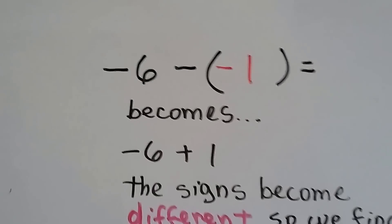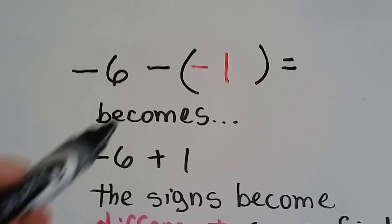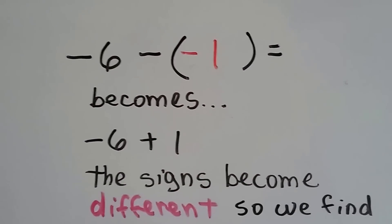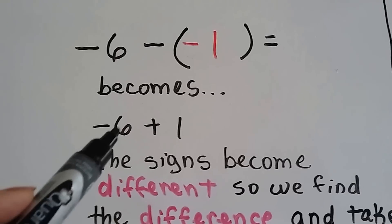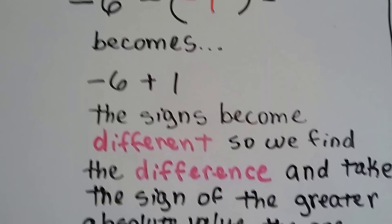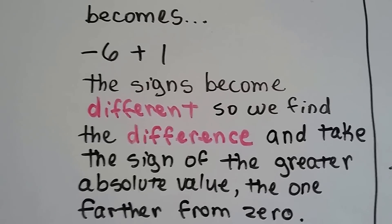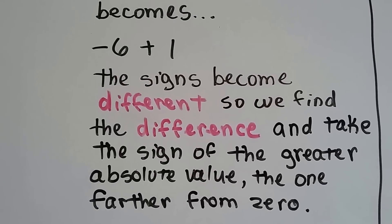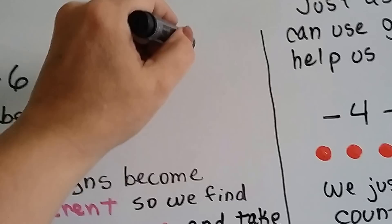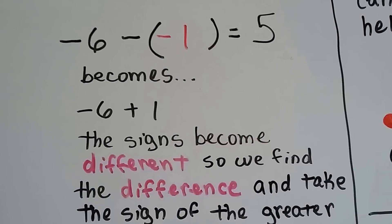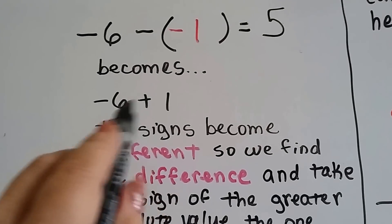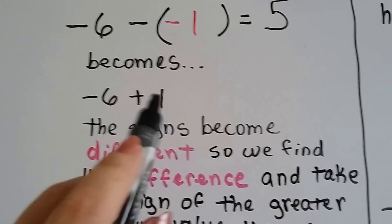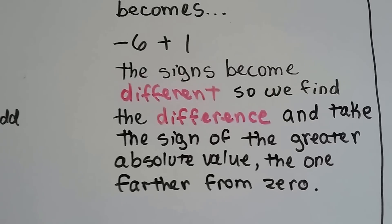Look at this one: negative 6 minus negative 1. We know the subtraction sign becomes a plus sign, and negative 1 becomes its opposite, positive 1. So now we've got negative 6 plus 1. The signs are different — and you remember the rule when the signs are different and we're adding? Signs are different, we find the difference. The difference between 6 and 1 is 5. Which sign do we use? We use the one with the larger absolute value — the one farthest from zero. 6 is farther from zero and it's got a negative sign, so this is going to be a negative 5.